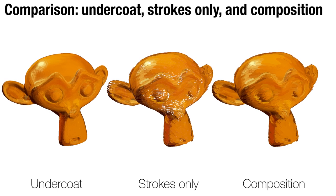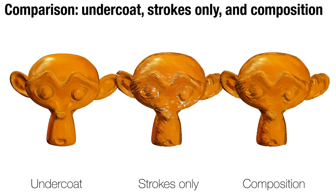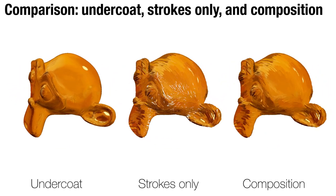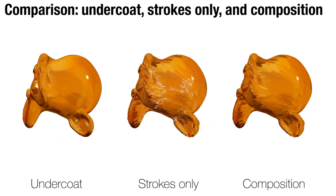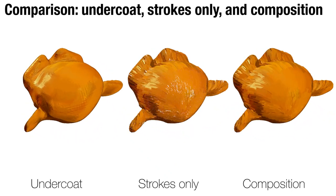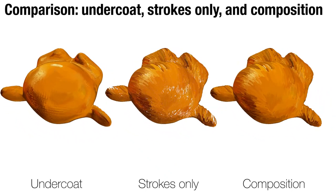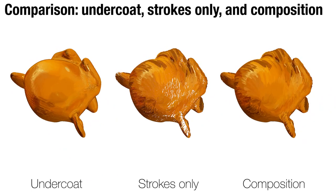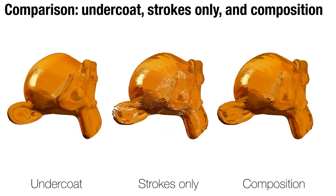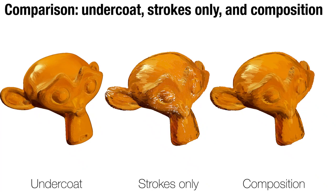We use our predicted color attributes from the nearest neighbor regression as undercoat. Note there are still some gaps between the generated strokes. Instead of adding more levels of anchor points and strokes, we simply compose our strokes on top of the undercoat.